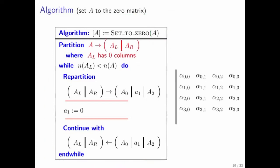And how do we do this? Well, initially, we say take matrix A and partition it into a left part and a right part where the left part has zero columns. That's illustrated right here. Then we check whether we're done, which we're not.